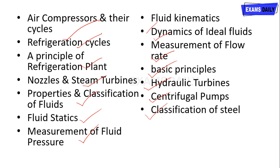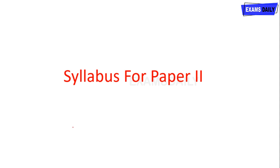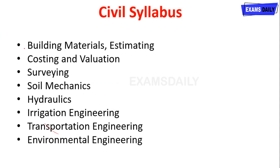Once you complete Paper 1 with minimum qualification marks, you are eligible to write Paper 2. Paper 2 requires you to give importance to your subject stream. The detailed syllabus for Paper 2: for Civil Engineering — building materials, estimation, costing and valuation, surveying, soil mechanics, hydraulics, irrigation engineering, transportation engineering, and environmental engineering. The Paper 1 and Paper 2 syllabi may look similar, but the level of questions varies.